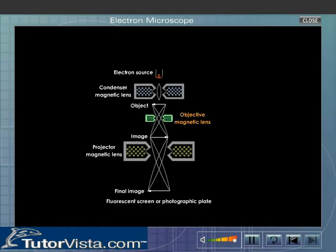The objective lens placed below the object forms an enlarged image of the object. This magnified image serves as a virtual object for the projector lens. The Magnetic Projector Lens produces the final enlarged image of the object on a fluorescent screen for visual examination or on a photographic plate for permanent record.